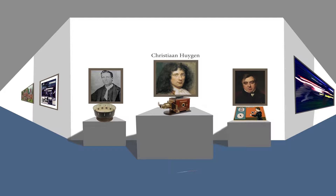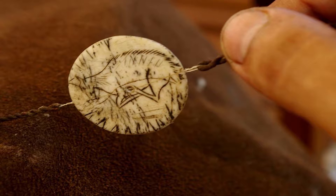The Zoetrope, invented by mathematician William George Horner in the year 1834, used spinning mirrors and light to help depict the images moving inside the device. The Thaumatrope, which was invented by John Ayrton in the year 1824, followed a similar principle, except it was a spinning coin attached to two pieces of string. But in actual fact, it was inspired by a spinning bone disc that was uncovered by archaeologists in 1868.